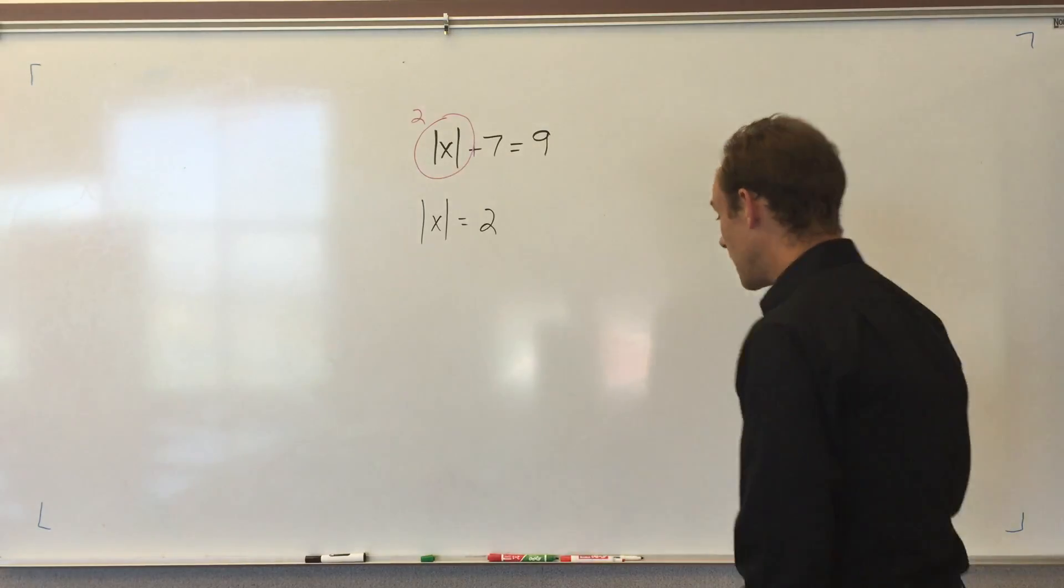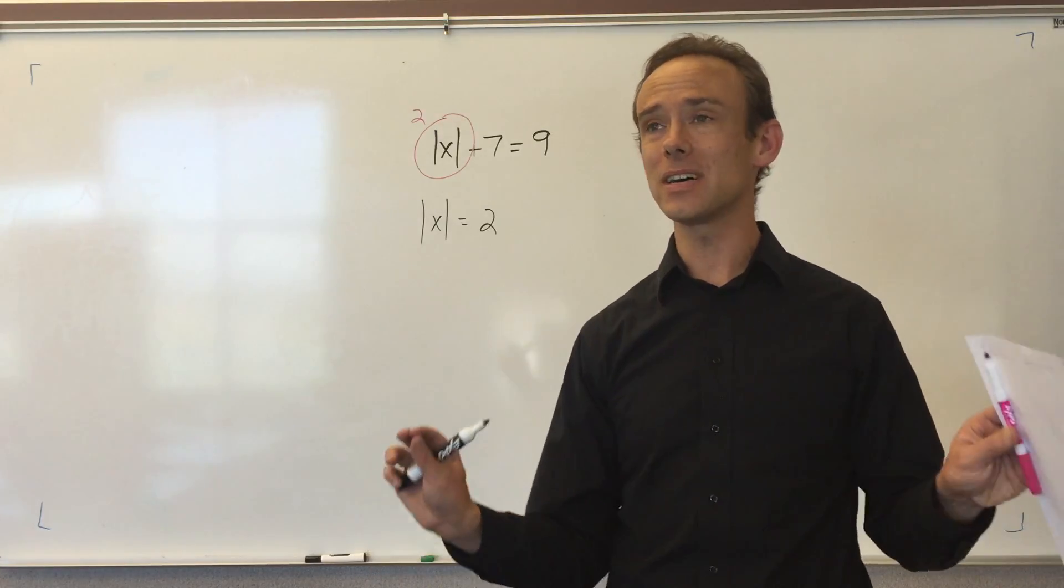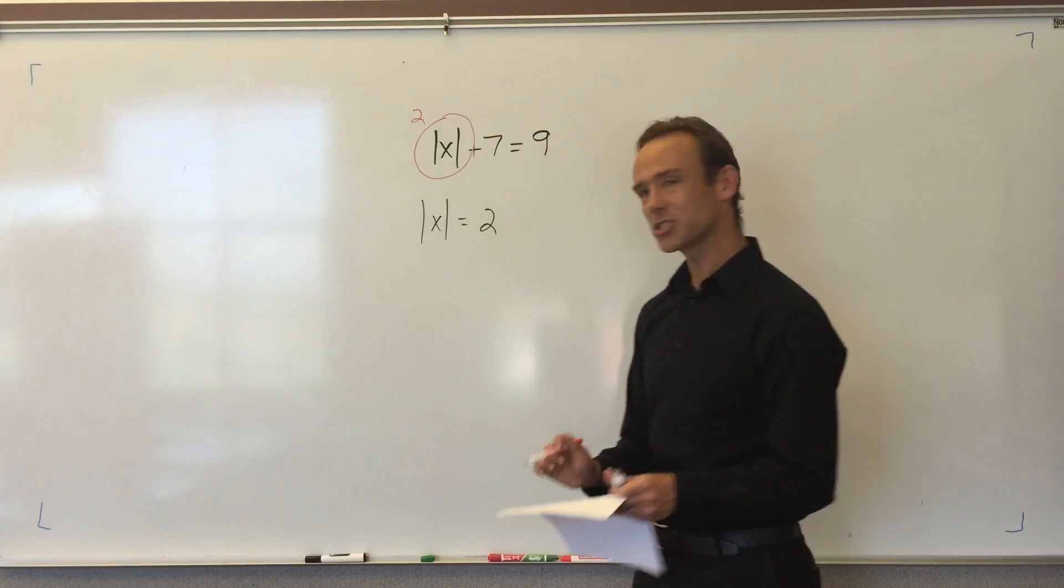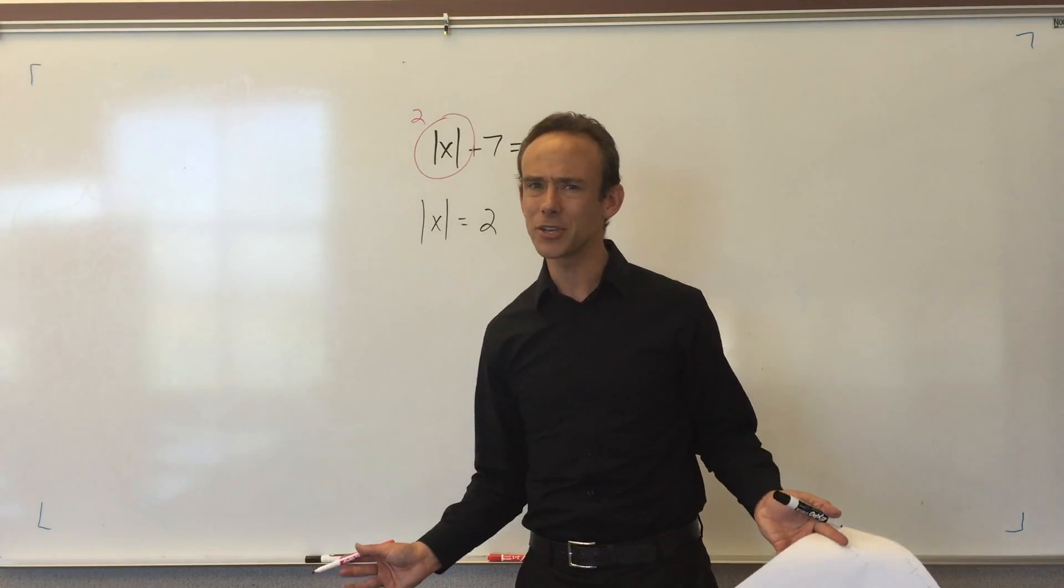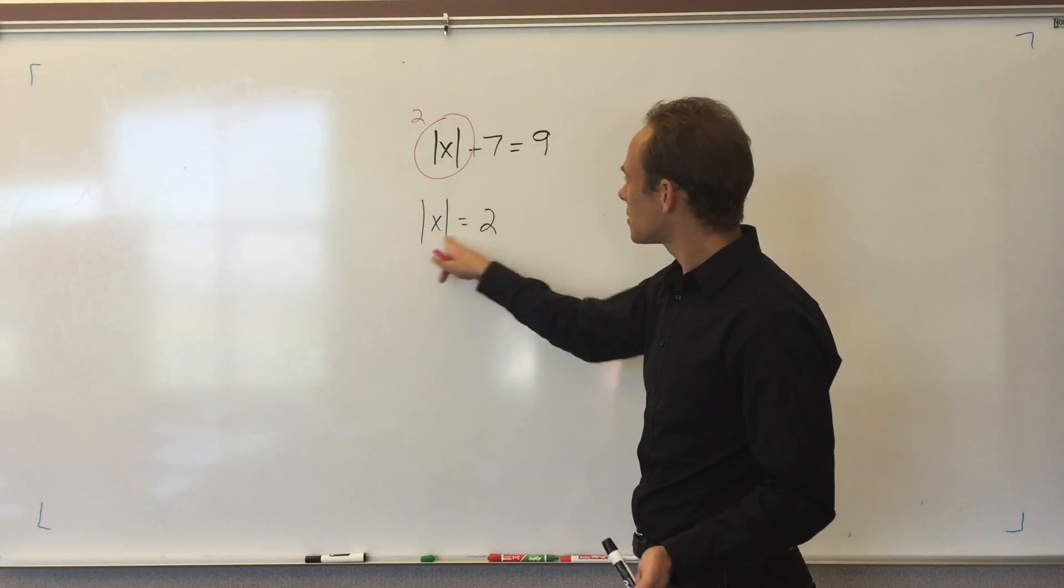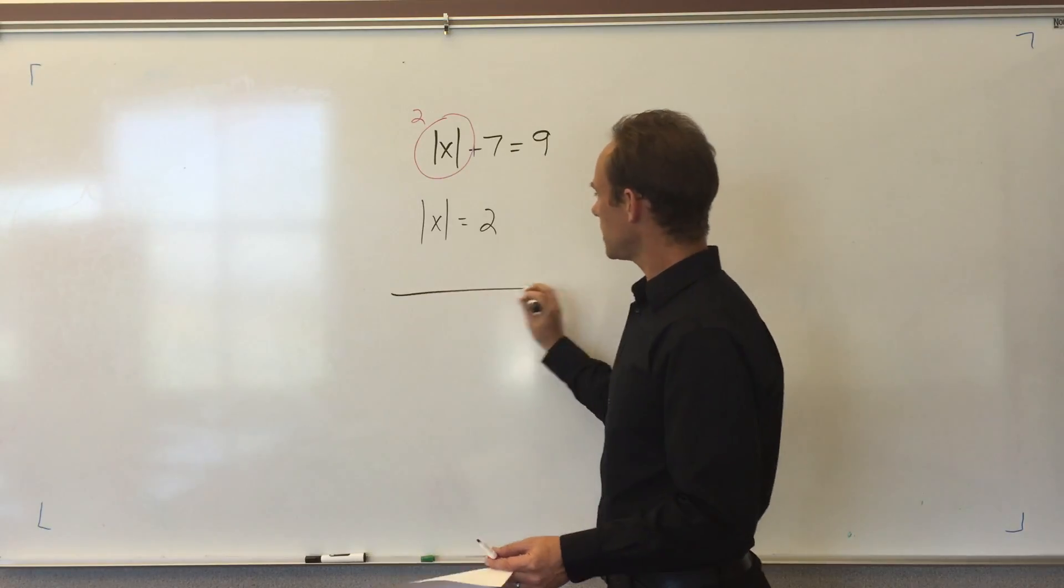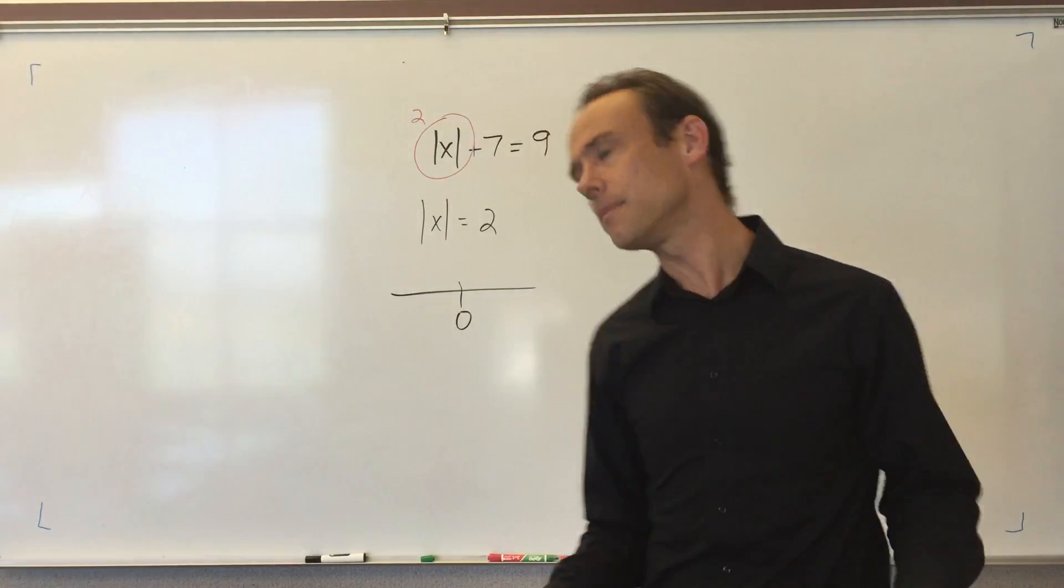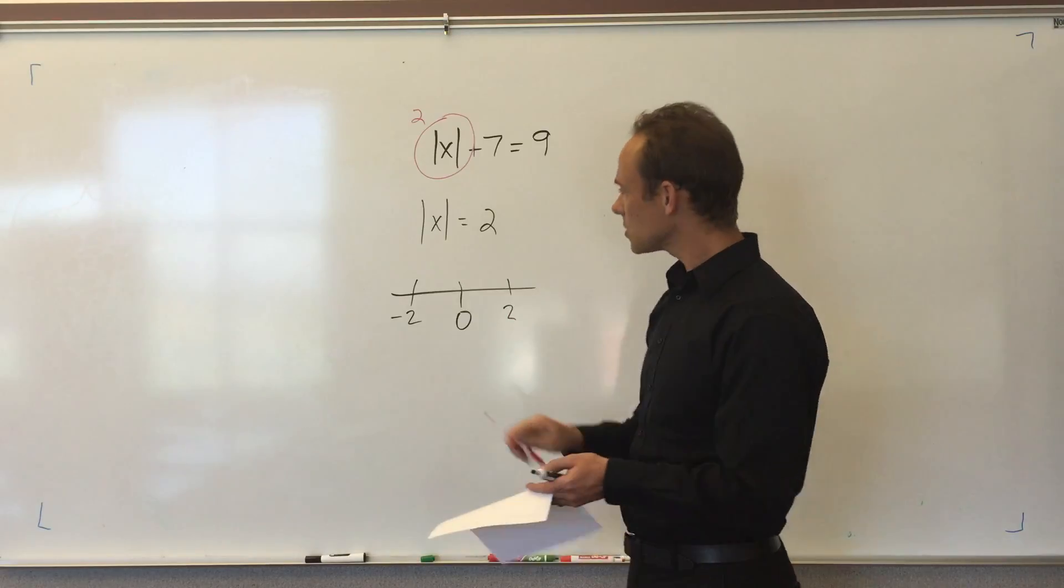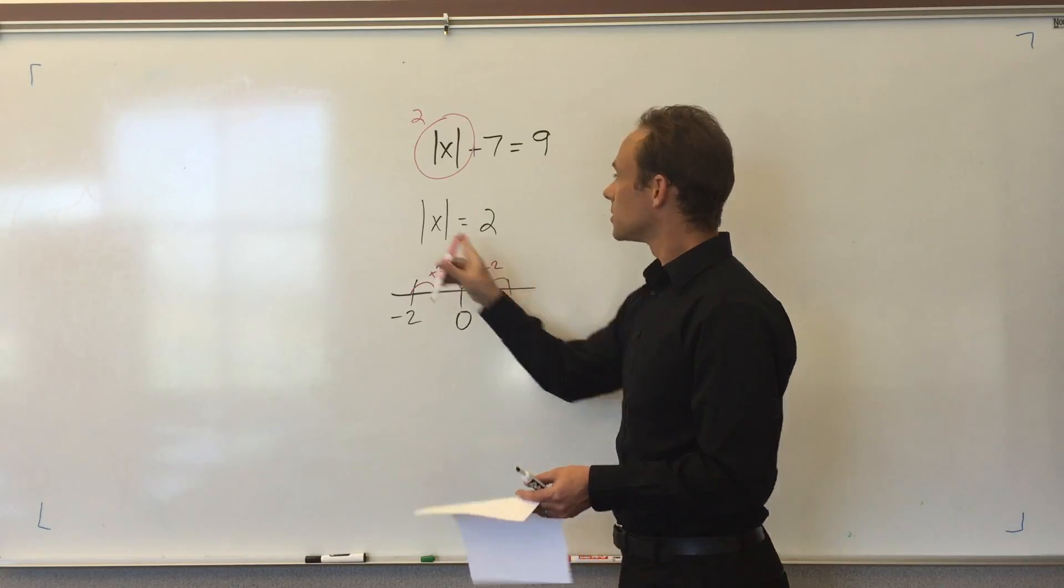With absolute values there's always two solutions, except for a couple exceptions. I'm expecting two solutions because the absolute value is the distance from zero, and there's two numbers that are two steps from zero. There's negative 2 and positive 2. You can see we got two steps there, two steps there, so there's going to be two answers.